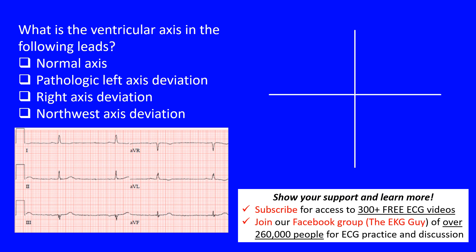Here we have a question that says, what is the ventricular axis in the following leads? These leads down here are the six limb leads on the left side of the standard 12-lead ECG. You can imagine the other precordial leads would sit here: V1, V2, V3, V4, V5, and V6.